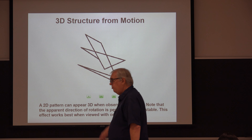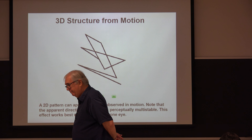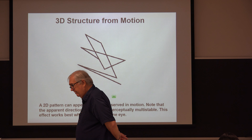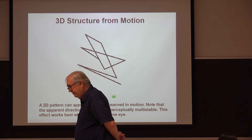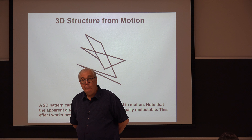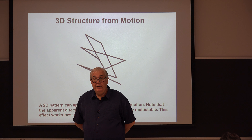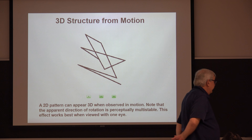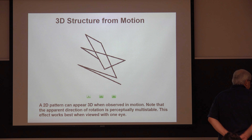A student describes what they see: a triangle and a trapezoid with an extra line at the bottom. It looks 2D, not 3D. The class agrees — nobody sees a 3D object in the static display. But let's get it going in motion.